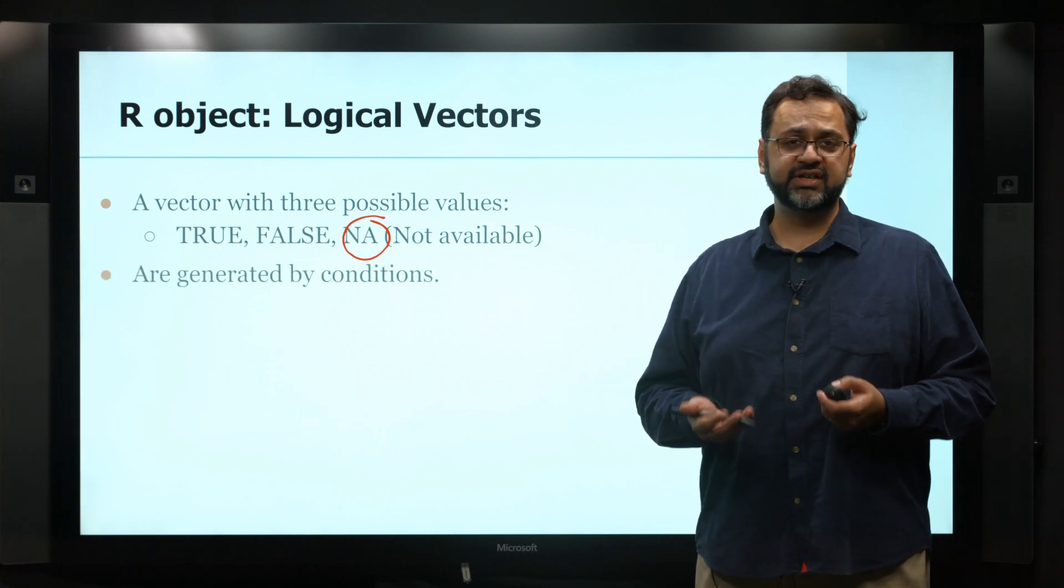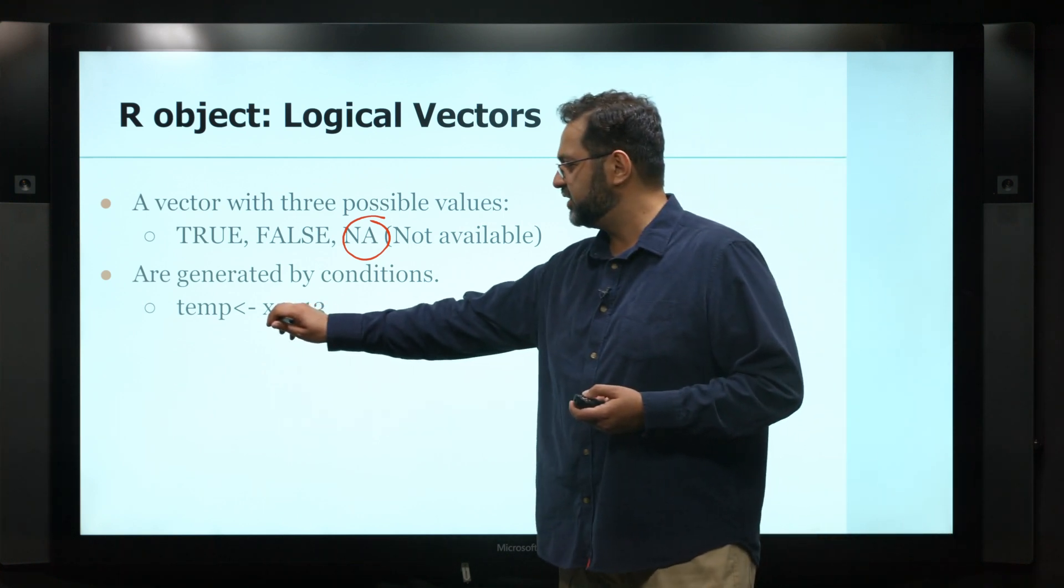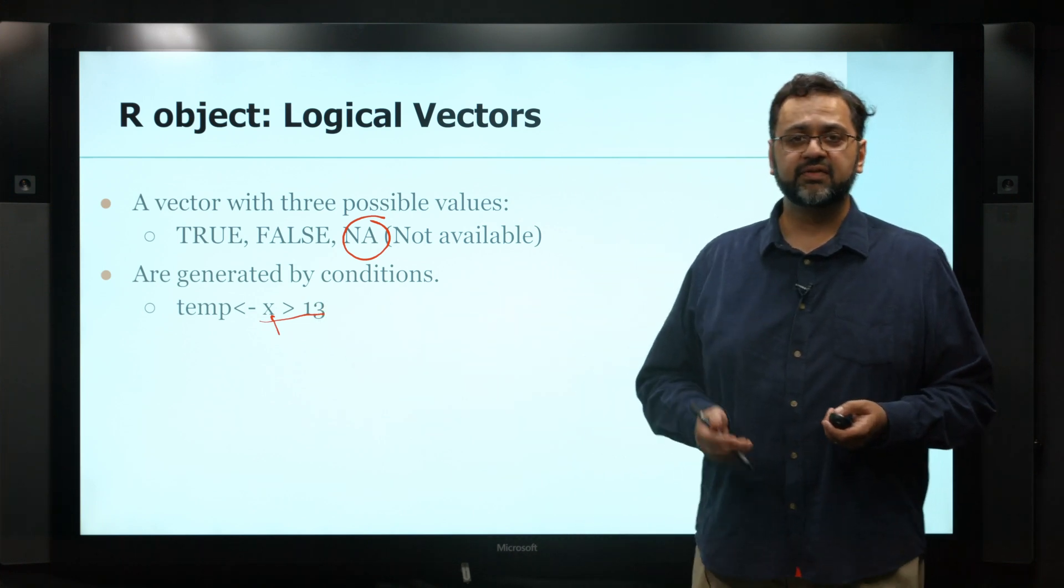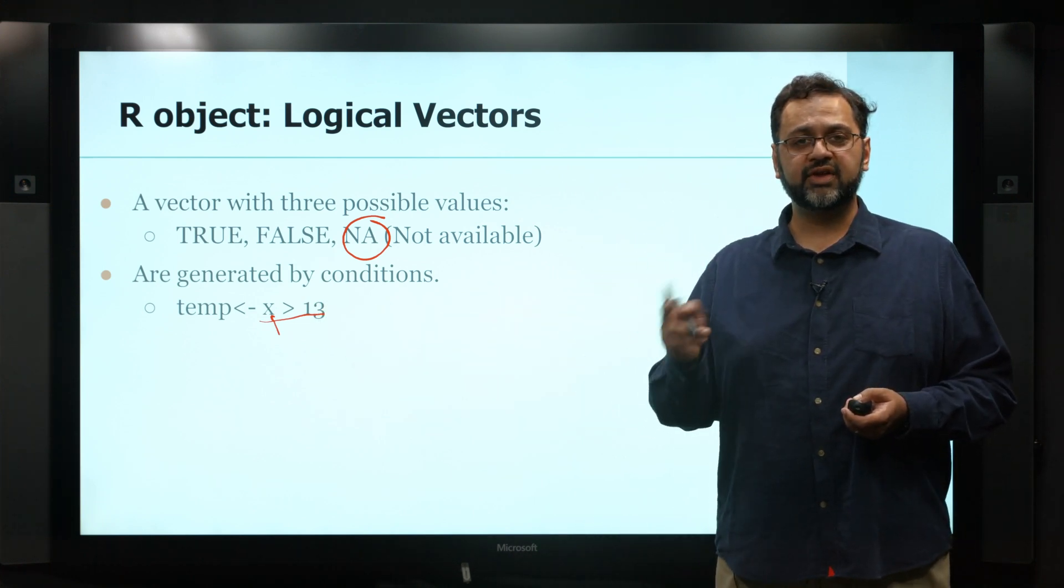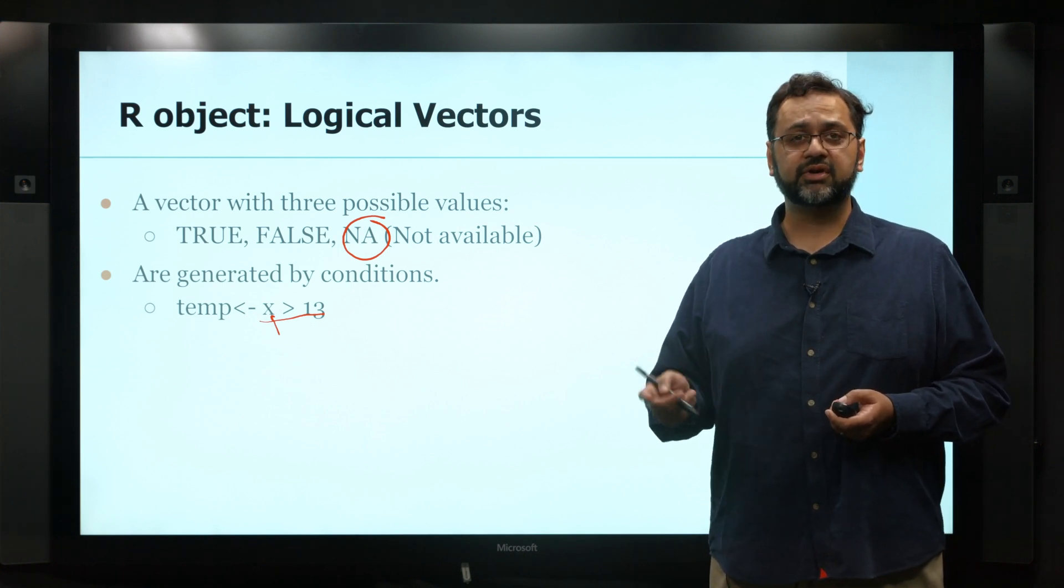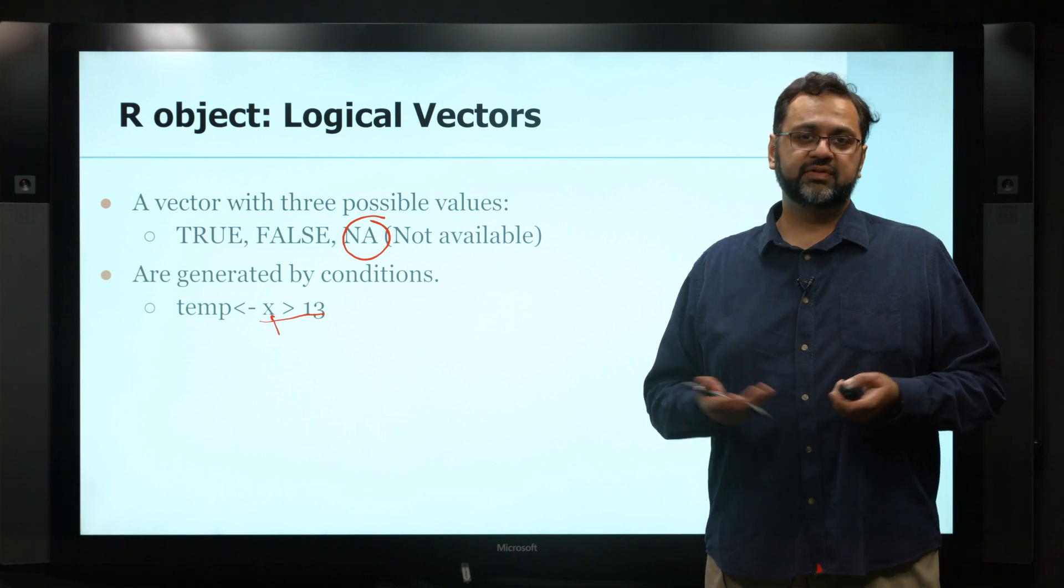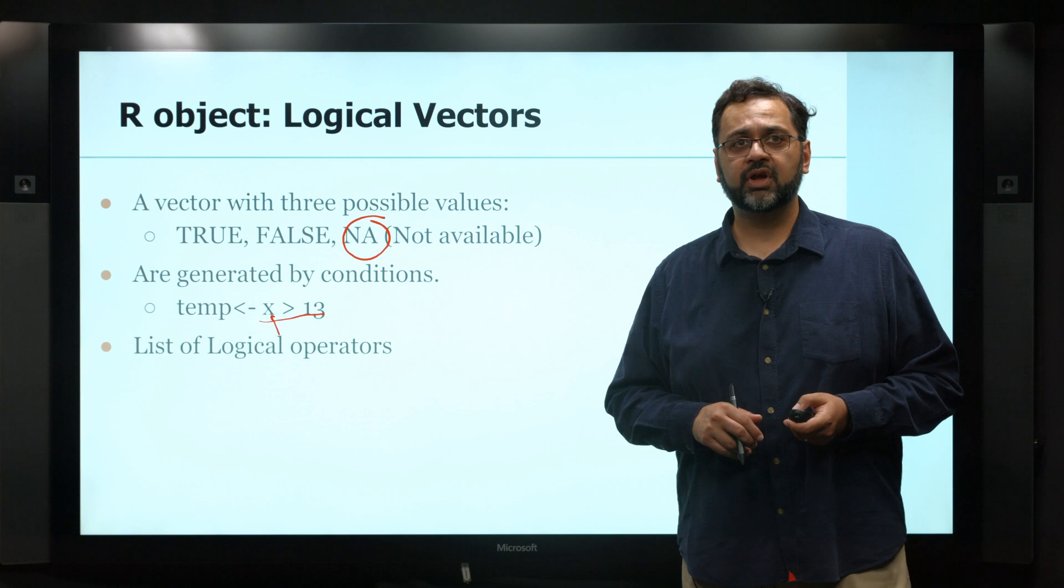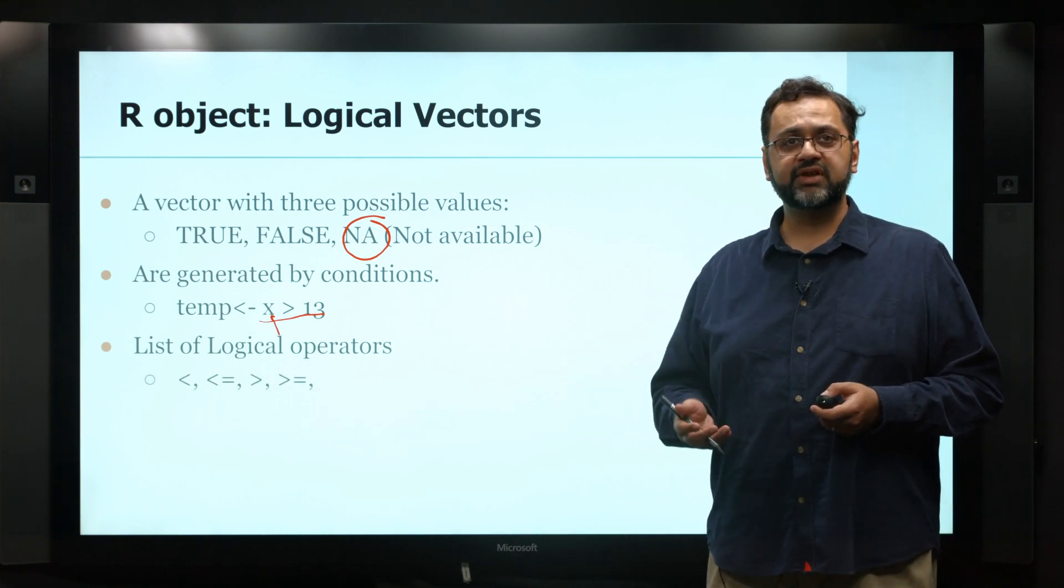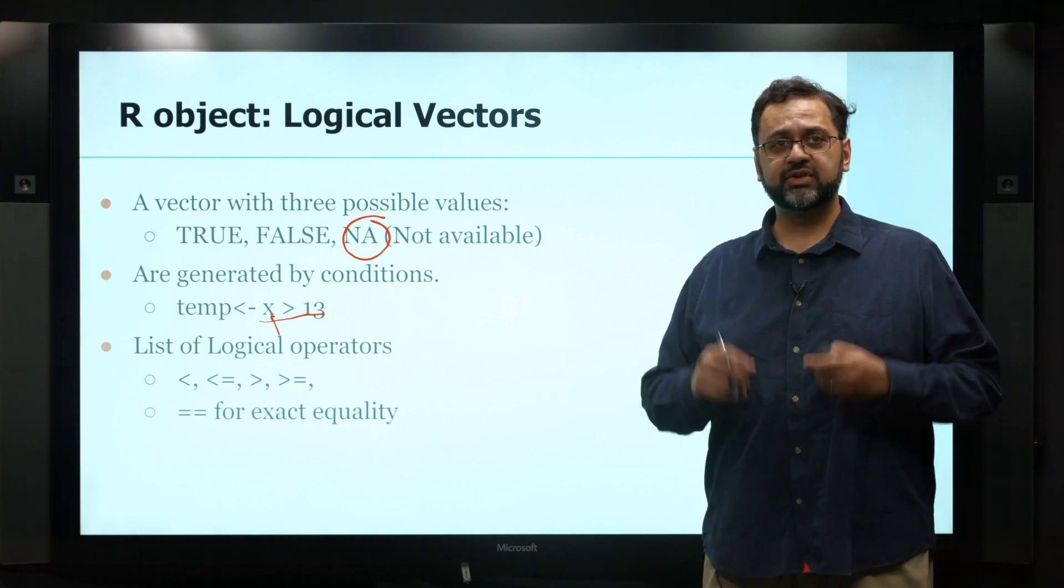These are easily generated by using conditions. For example, if I have a vector x and I ask for all the values in x that are greater than 13, it will give me TRUE or FALSE for every value. It will be FALSE where it's not, and NA for any missing value because it doesn't know. You can have less than, less than or equal to, greater than, greater than or equal to. You can also have exact equality if it matches.